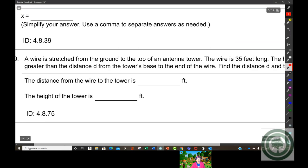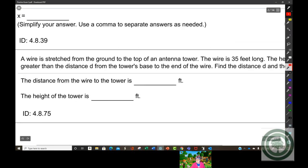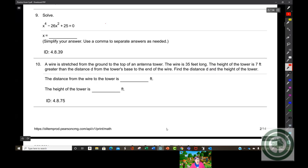A wire is stretched from the ground to the top of an antenna tower. The wire is 35 feet long. The height of the tower is seven feet greater than the distance d from the tower's base to the end of the wire. Find the distance d and the height of the tower.